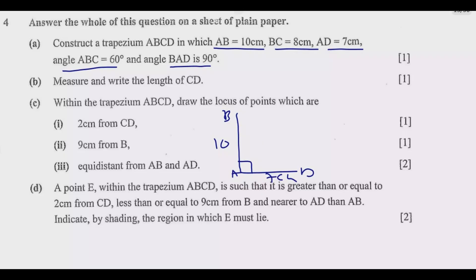Angle ABC is 60 degrees, so this should be 60 degrees. Then BC is 8 cm. Since 8 is slightly shorter than 10, the shape will be slightly smaller on that side. Then I join this point, and the shape will look something like this. Once I have the rough sketch, I can go and start constructing.